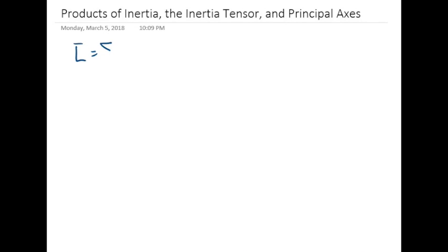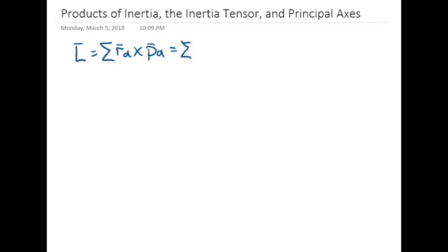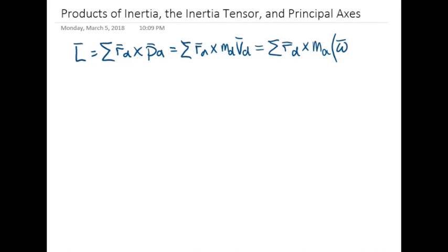For a collection of particles, L equals the sum of the position of each particle crossed with the momentum of each particle. We can rearrange that to say it's equal to the position of each particle crossed with the definition of momentum, which is the mass times the velocity of each particle. Since we're considering rotation, we can furthermore say that that is equal to the definition of rotational velocity, which is the angular velocity crossed with the position again.